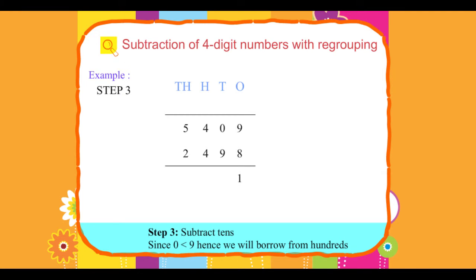Step 3: Subtract tens. Since zero is less than nine, hence we will borrow from hundreds. Zero tens plus ten tens, one hundred borrowed, equals ten tens. Ten tens minus nine tens equals one ten.